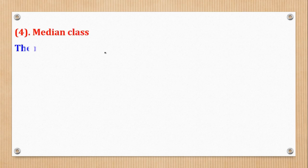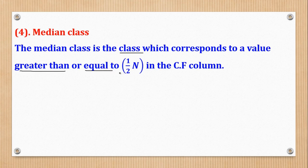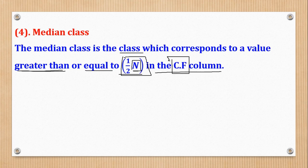Another one is the median class. The median class is the class which corresponds to a cumulative frequency value just greater than or equal to N/2. Capital N is the summation of all frequencies. You add up all the frequencies to get N, then divide by 2 and locate the class in the cumulative frequency column. Remember, math is practiced, not just read.